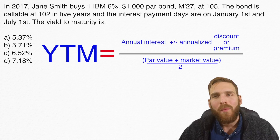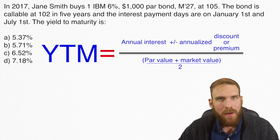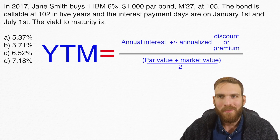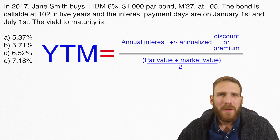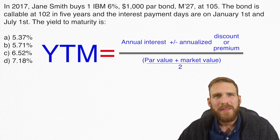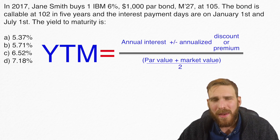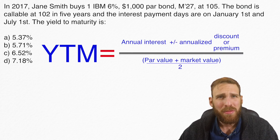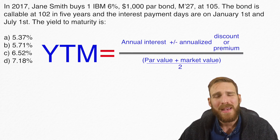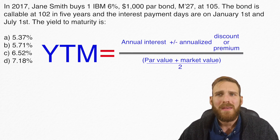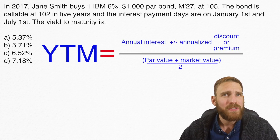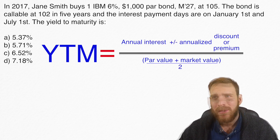I want to do the hard calculation first and then I'll show you the shortcut and probably the quicker and better way to do it afterwards. So let's start plugging numbers into the actual formula. Through that process, we'll see there's a lot of information in this question that's just not important to us.